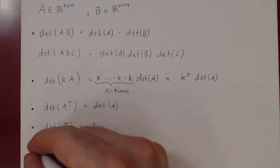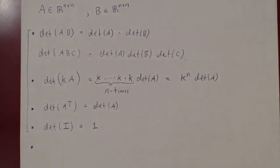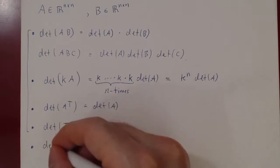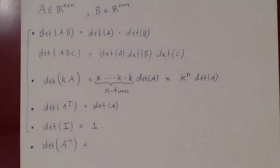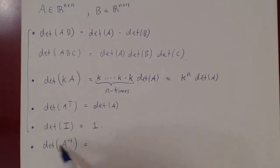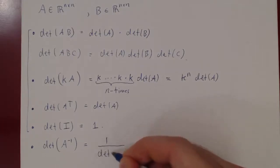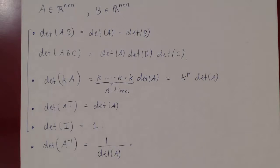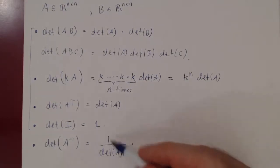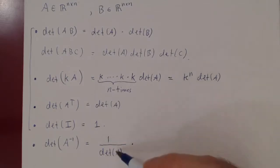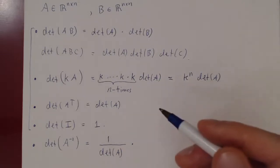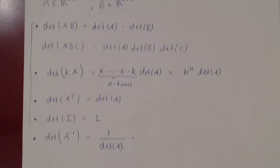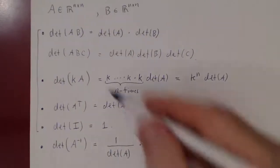One last property, which you can prove using the above: if A is invertible (i.e., A inverse exists), then the determinant of A inverse equals 1 over the determinant of A. The only issue would be if the determinant of A is 0, since 1 over 0 is undefined — and that's one more equivalency for invertibility.